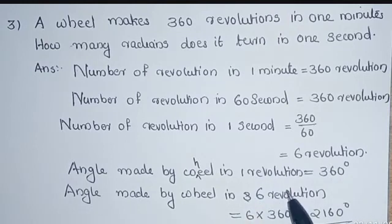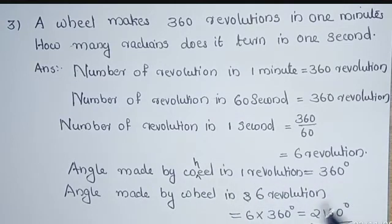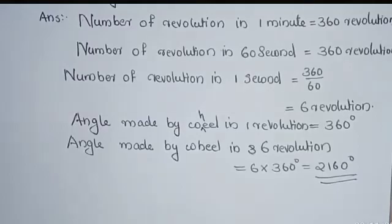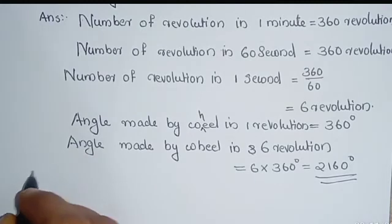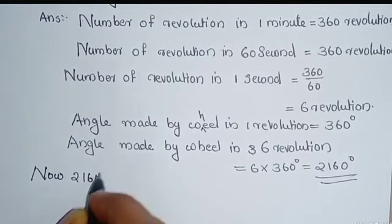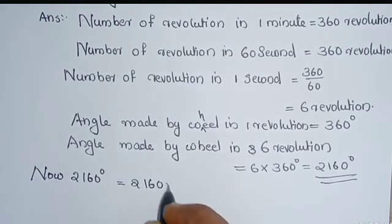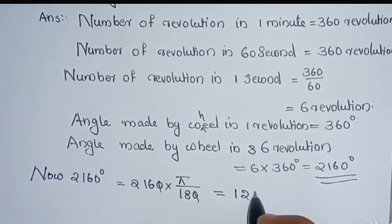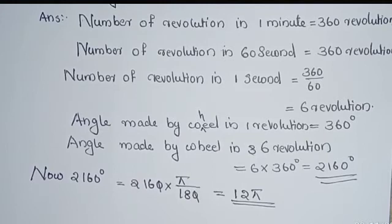We know that the wheel is round in shape, so the angle made by the wheel in 1 second equals 6 into 360 degrees, which is 2,160 degrees. Now we want to convert degrees into radians. So 2,160 degrees equals 2,160 multiplied by π/180. Cancelling, we get 12π. So the number of radians it turns in 1 second is equal to 12π.